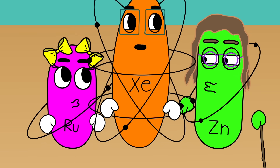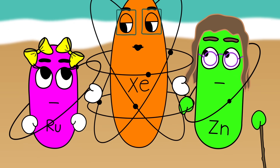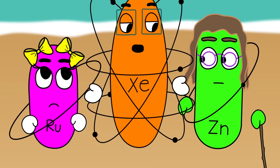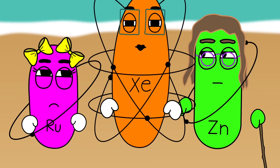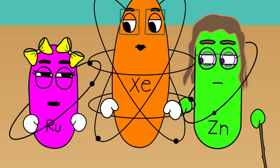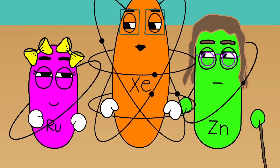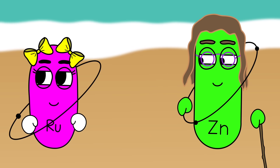Xenon: Well, I'm not so sure young love is chemical and not merely physical, but I suppose it could be both. Zinc and Ruth: Xenon, don't you have somewhere to be? Xenon: I can take a hint.